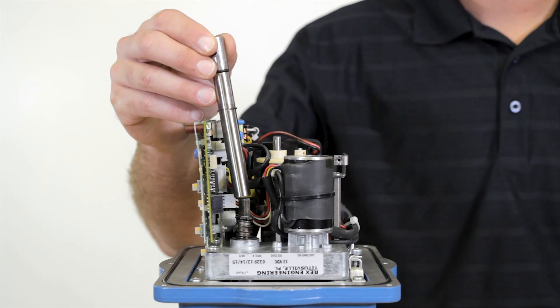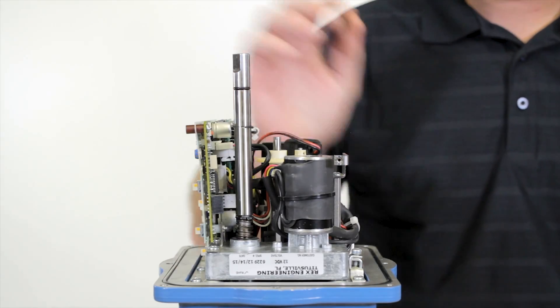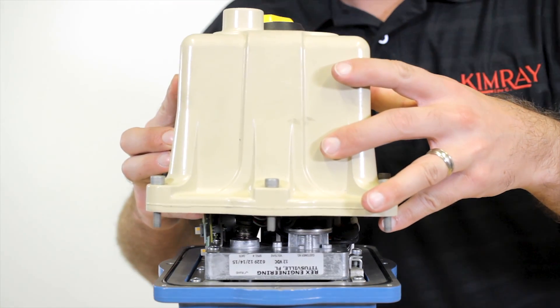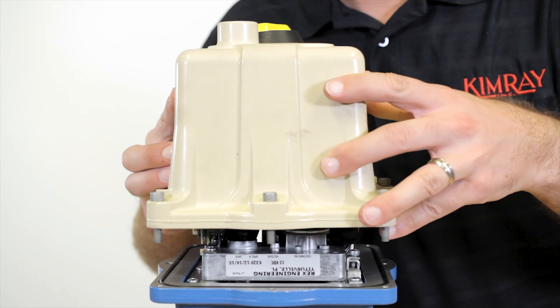Before you replace the cover, first take the manual override stem out and put it on the valvecon. Then attach the cover keeping it aligned with the base to prevent any damage to the back of the board.